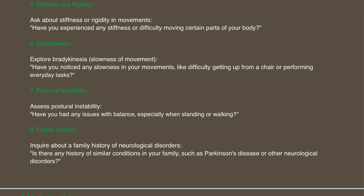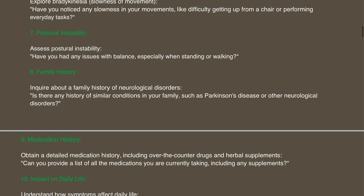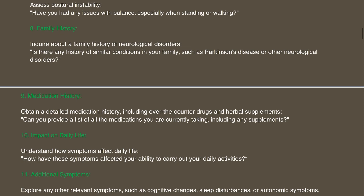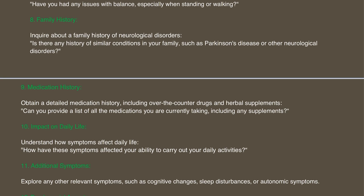We're going to talk about postural instability: 'Have you had any issues with balance, especially when standing or walking?' Once we have all the positive symptoms of Parkinson's and we're satisfied we've taken all the relevant history, we jump to family history: 'Is there any history of similar conditions in your family such as Parkinson's disease or other neurological disorders?' Medication history is very important: 'Can you provide a list of all the medications you are currently taking, including any supplements?' Always ask about over-the-counter medications as well.